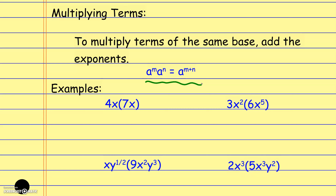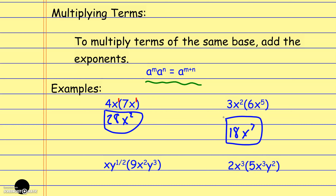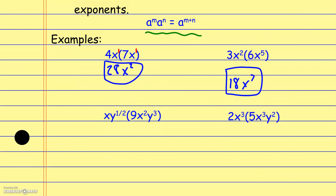Looking at examples: 4 times 7 is 28 — numbers work the same as always. Then x to the first times x to the first — since no exponent is written, it's 1 — so adding exponents gives x squared. Next, 3 times 6 is 18, and x squared times x to the fifth is x to the seventh. For 1 times 9, that's 9, and x to the first times x squared gives x to the third.